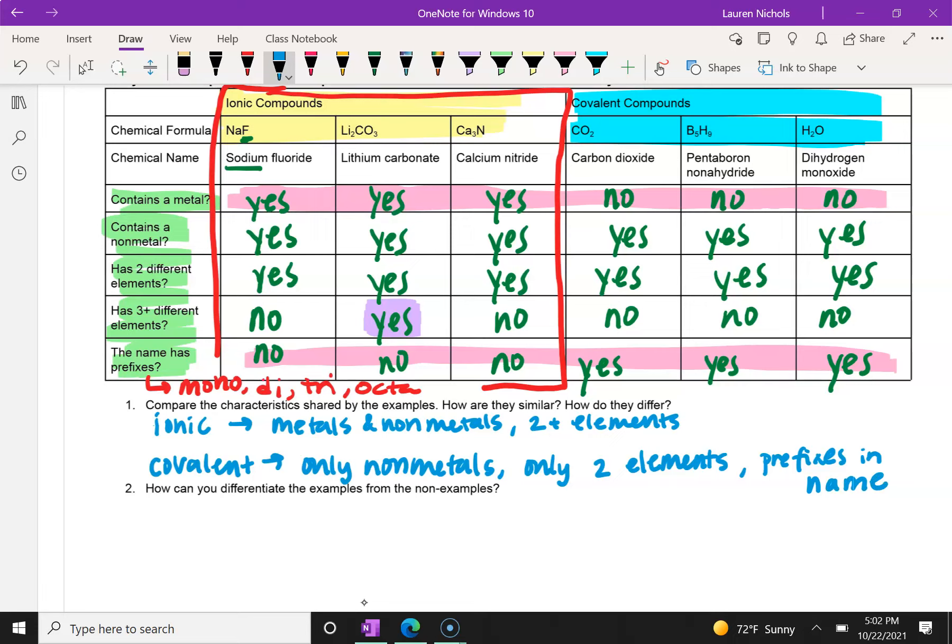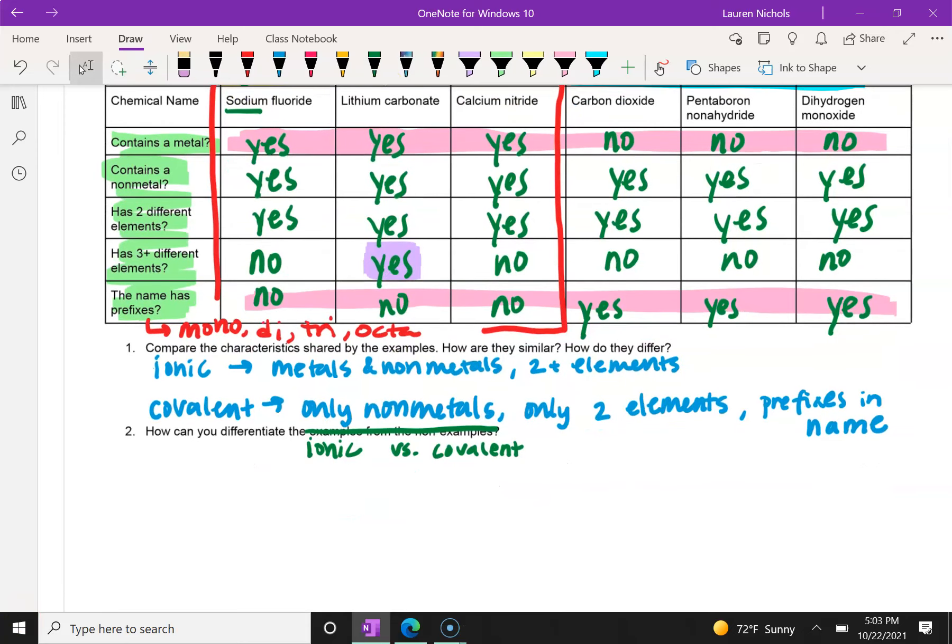Now, so how can we differentiate the examples from the non-examples? And by that, I just mean how can we differentiate ionic versus covalent? So what we're going to want to do is pay attention to those rows highlighted in pink. You look for a metal because an ionic compound will have a metal, but a covalent compound will not have a metal. Or you look for prefixes in the name.